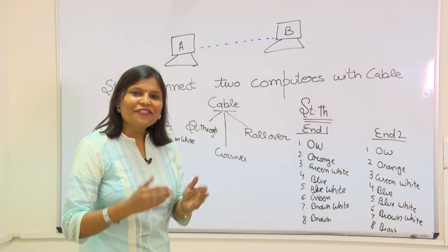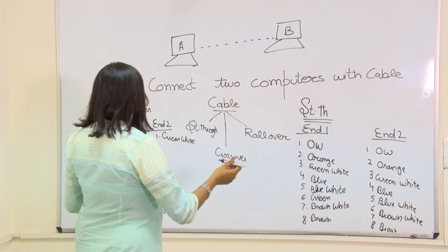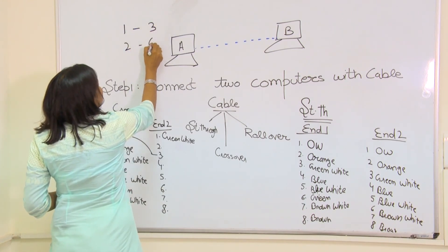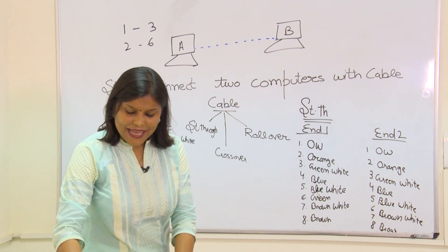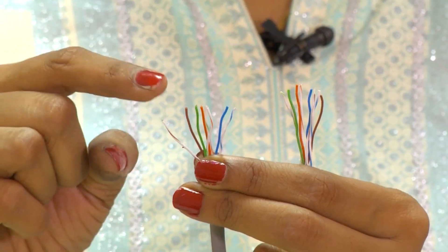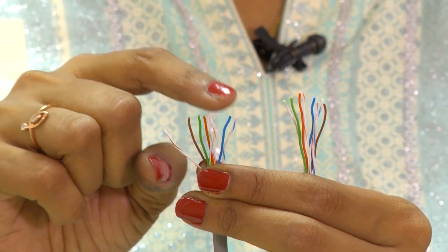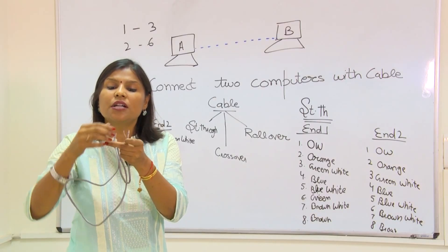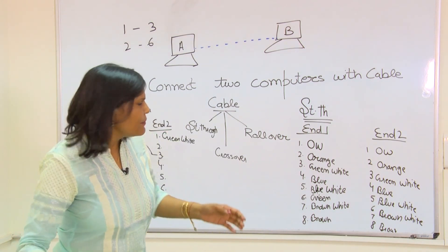But if I am taking a different combination, now what is different combination? Not in a haphazard manner, this is just 1, 3, 2, 6 rule. What does that mean? That means that if I am keeping this sequence in this manner, if I am keeping the first wire, let us say green here, I have to keep the green wire at the third position on the other end.